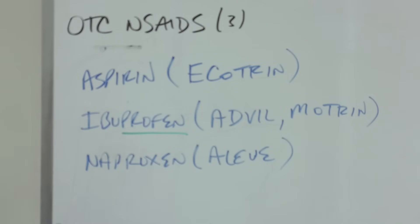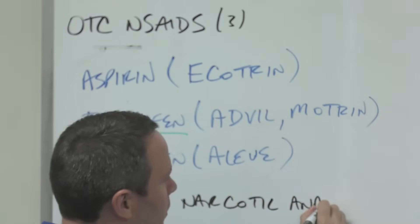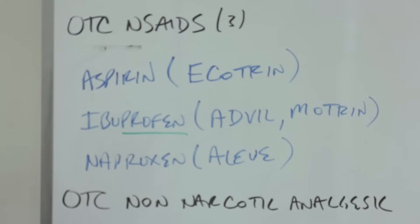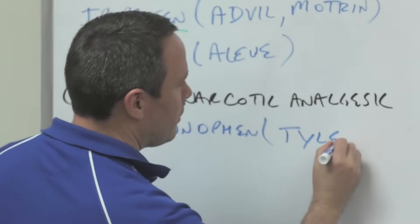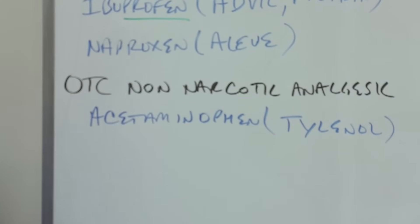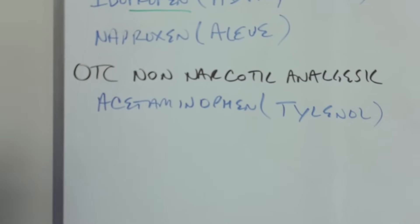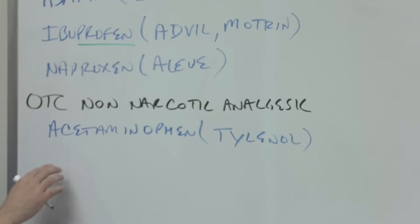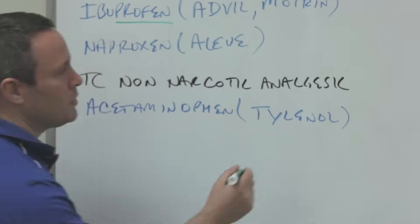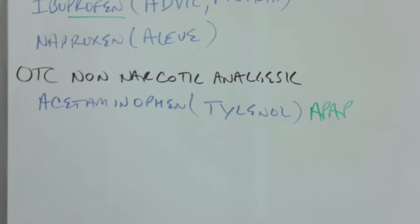We go from the OTC NSAIDs to what would be a non-narcotic analgesic, also over-the-counter, and the one that you're probably most familiar with is acetaminophen, Tylenol. There's no stem here, but what you can see, just like with aspirin—aspirin is actually acetylsalicylic acid which is abbreviated ASA—we also have an abbreviation that actually comes from acetaminophen, which is from N-acetoparaaminophenol, which is APAP.